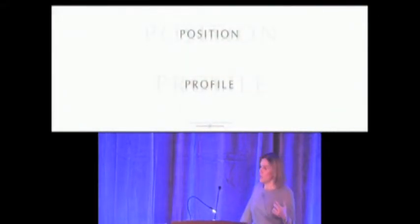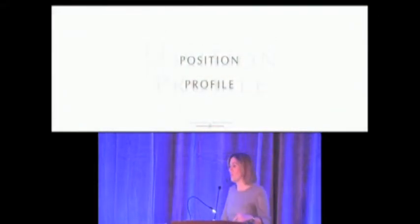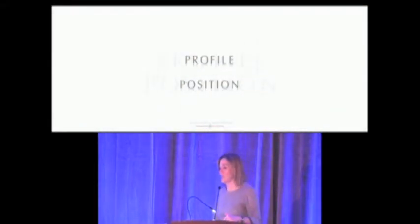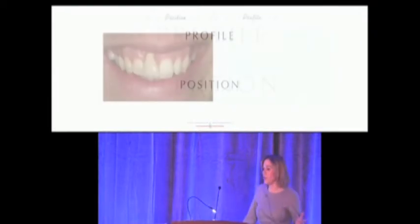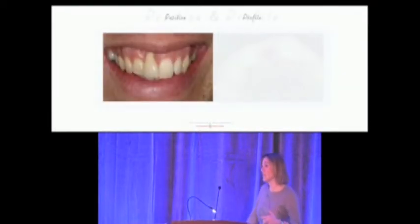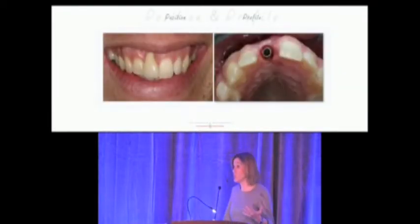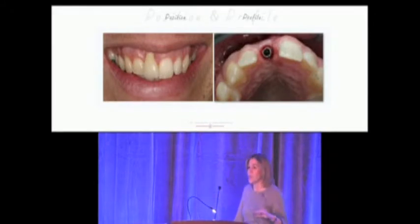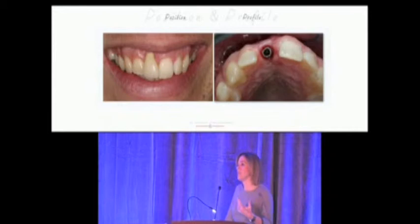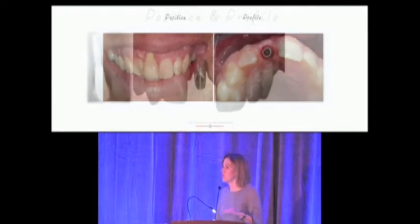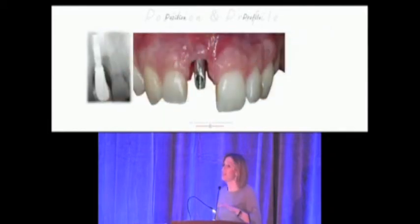There is a correlation between the position of the implant and the emergence profile. The worst scenario is when the implant is very buccally positioned, giving the appearance of a very long tooth. In this case, the implant was not only very buccally positioned, but also very deep.